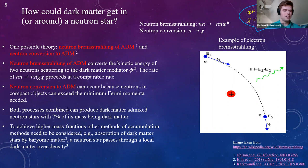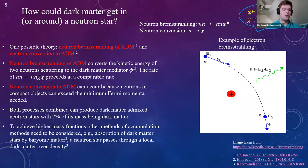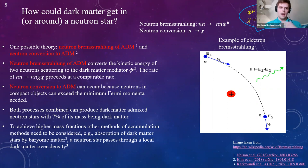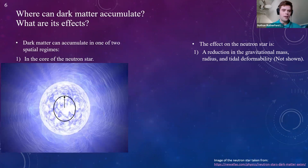If we want to achieve higher dark matter fractions, we need to look to other methods of accumulation, such as absorption of a dark matter star by baryonic matter as proposed by Karkevandi et al., or a neutron star passing through a dark matter overdensity in the galaxy and accumulating something more than the proposed 7%.